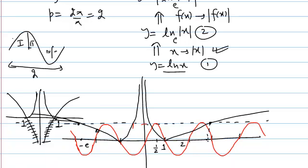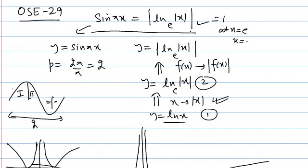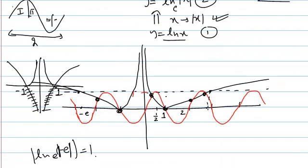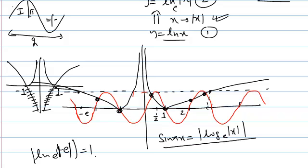Now we count the points of intersection. There is 1 point here, 2, 3, 4, 5, and 6 points. So there are 6 points of intersection between the two graphs, meaning the equation sin(πx) = |ln|x|| has 6 roots. These 6 intersection points are the 6 values of x where sin(πx) equals |ln|x||.